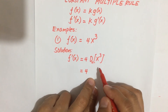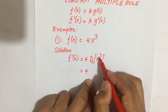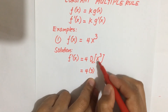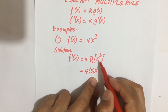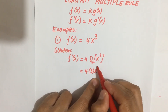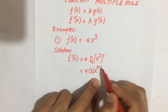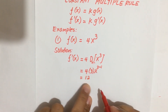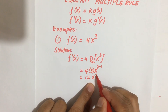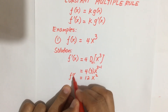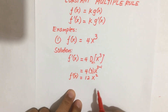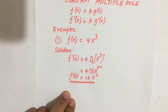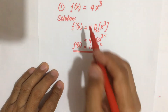Using the power rule, the power comes down and you multiply it with the base x, then the exponent becomes n minus one. So this is 4 times 3, that is 12, times x to the power 2. So this is our derivative — an example of the constant multiple rule.